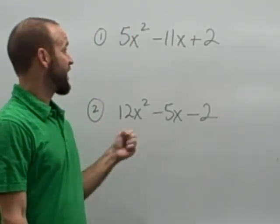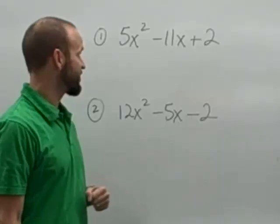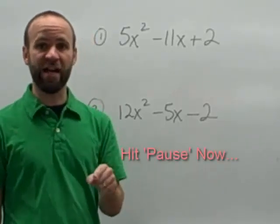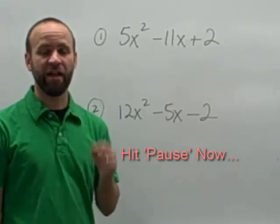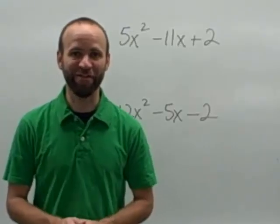Now I'm going to ask you to pause the video. I'm going to give you two trinomials to try to factor. Try to factor 5x squared minus 11x plus 2, and then 12x squared minus 5x minus 2. Go ahead and hit pause now, try factoring these out, and then when you think you've got it, hit play and I will reveal the answers.